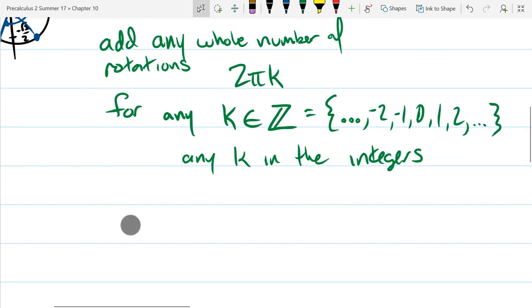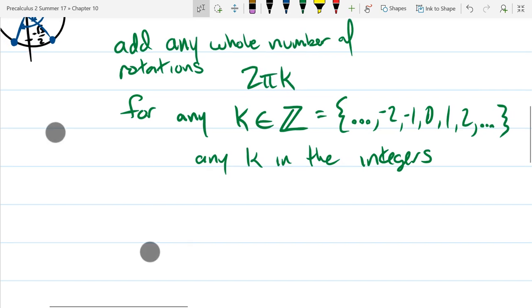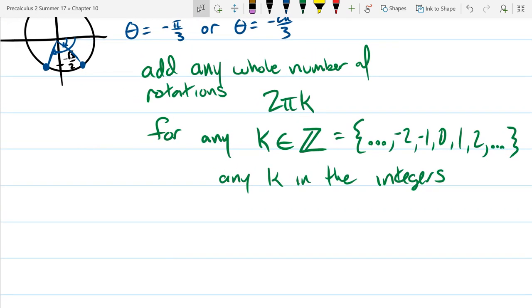that's what it looks like. And we use dot dot dot when there's an obvious pattern. It should be pretty obvious what the pattern is both directions. So it's all the whole numbers and the negative whole numbers.